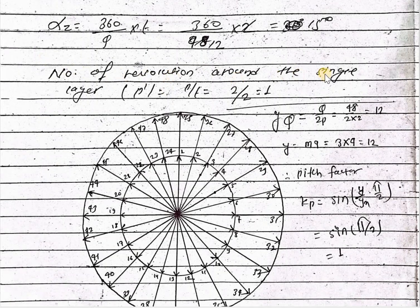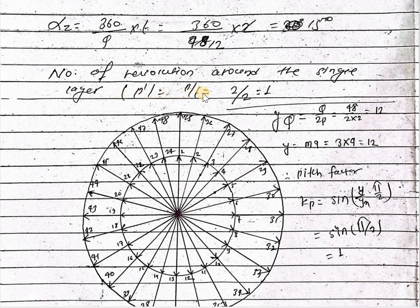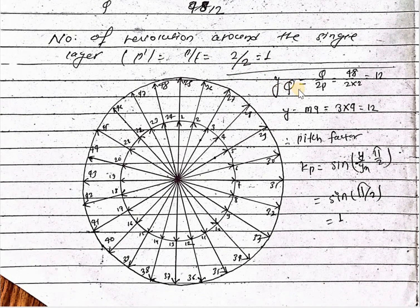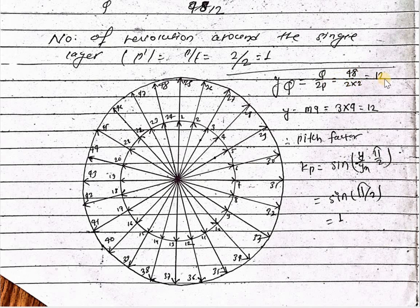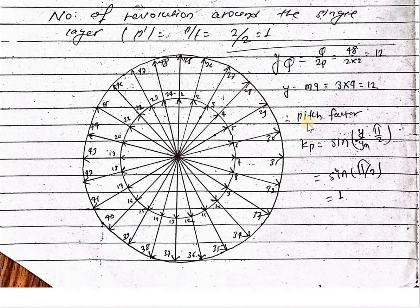And number of revolutions around the single layer equal to p of 1t raised to 2 upon 2 equal to 1. And you know yq equal to q upon 2, we put the value of q and 2 will raise 2 value. And y equal to m into q, that is 3 into 4, 2 value.